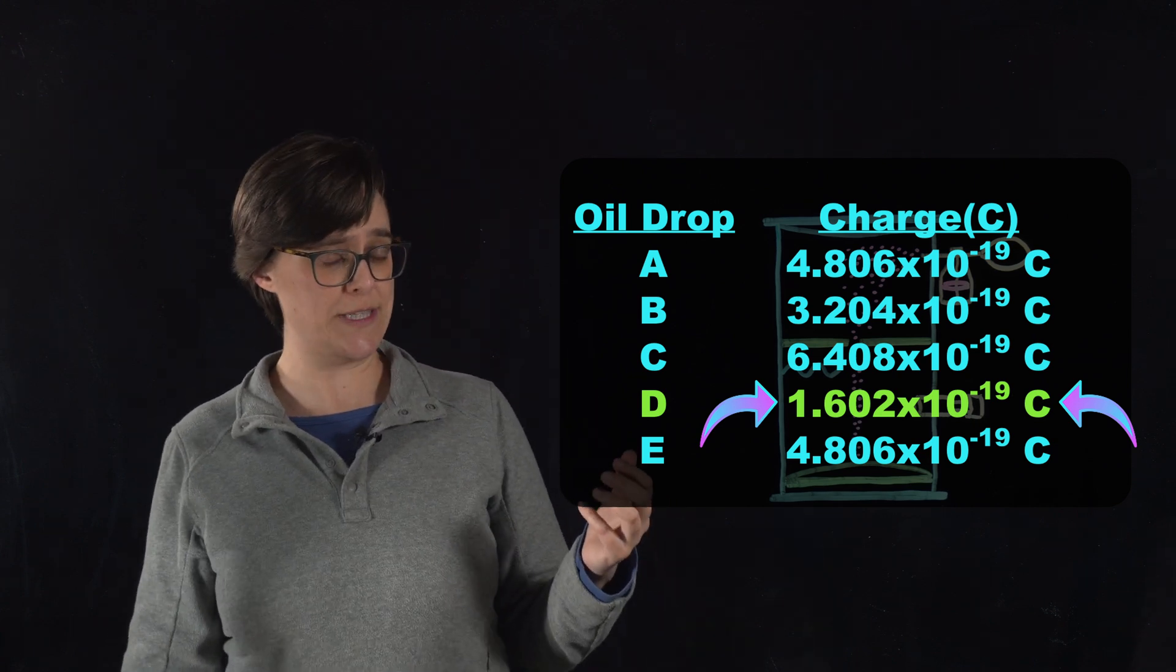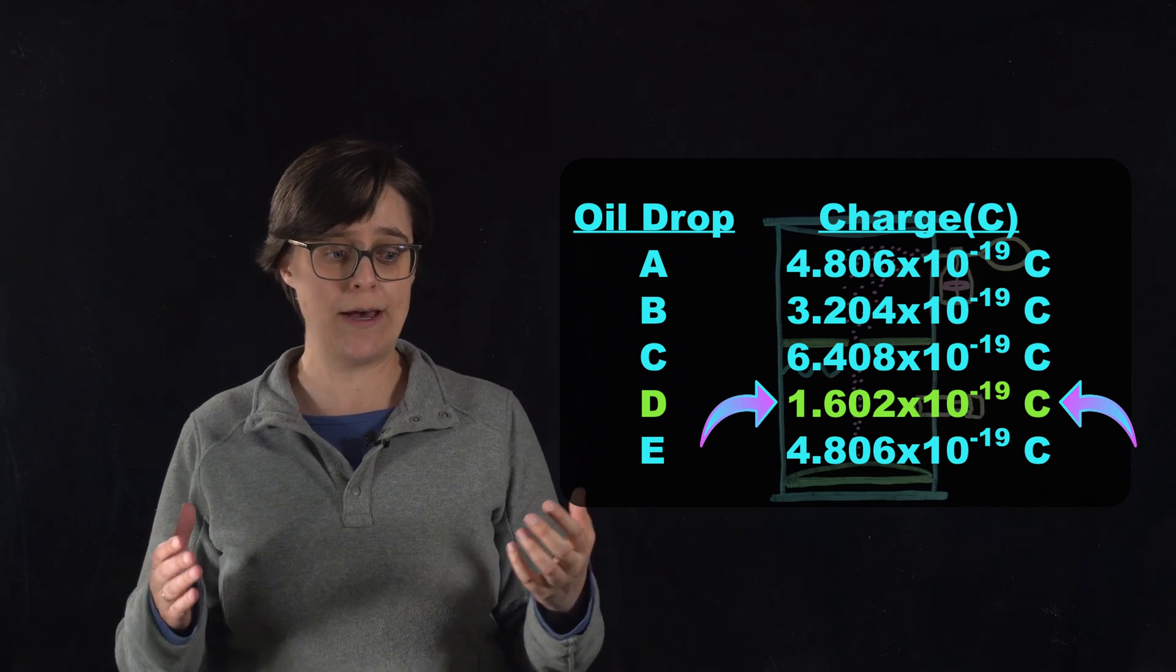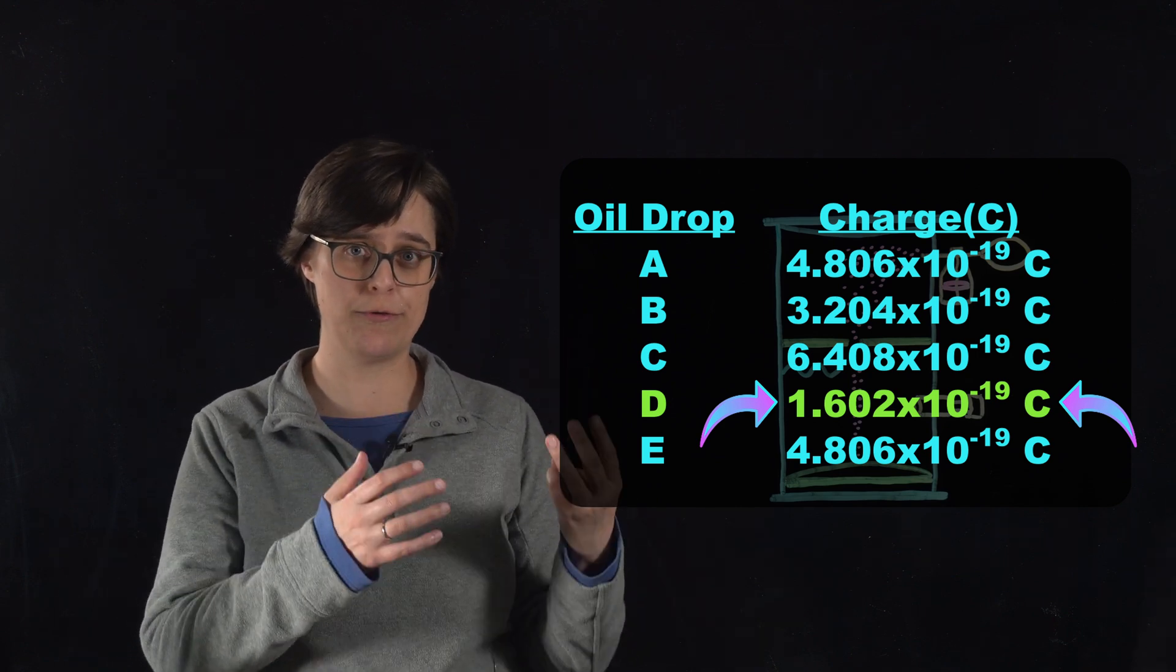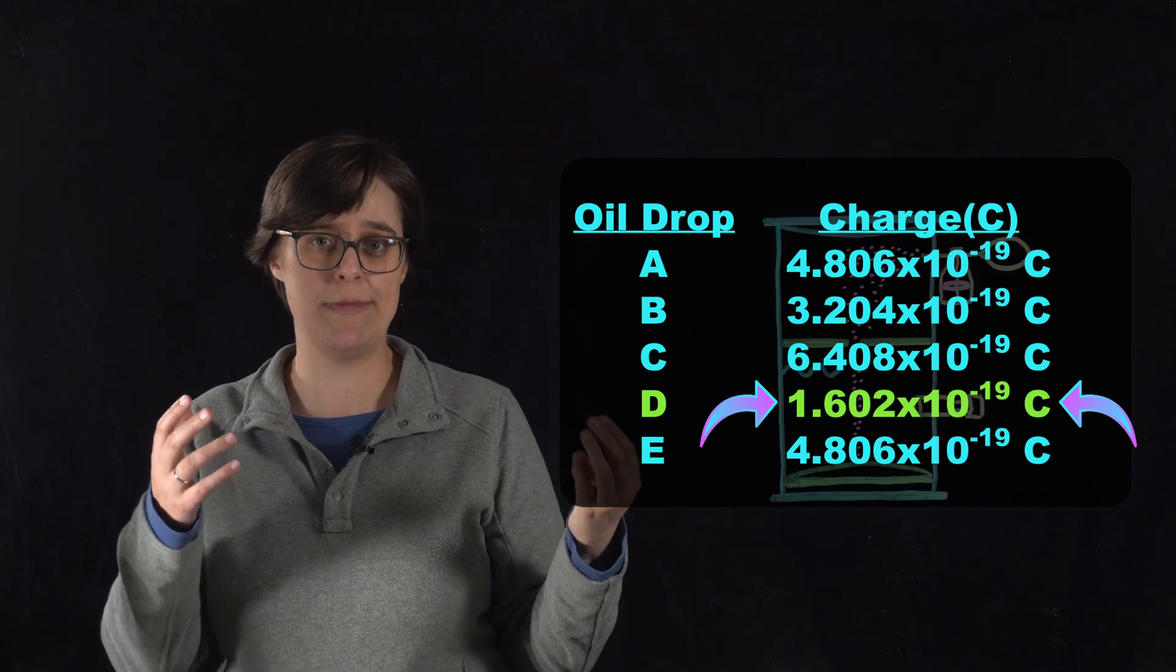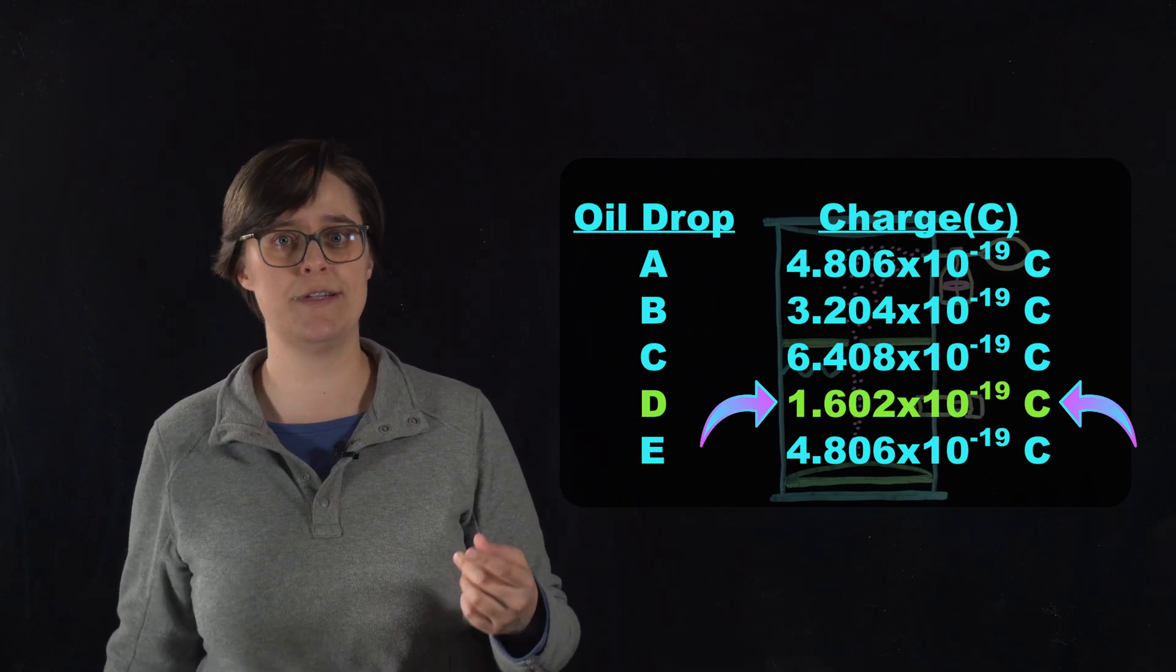If one specific measurement was three times higher, then that oil droplet must have three electrons. We'd be measuring a group of three electrons, not just one.